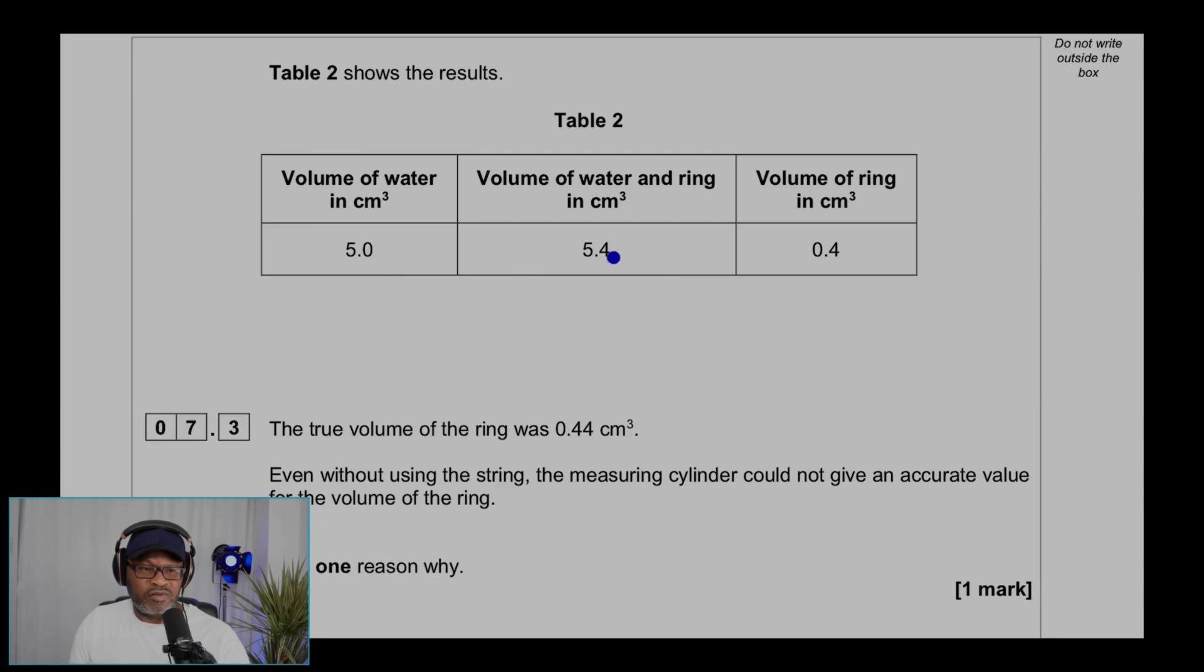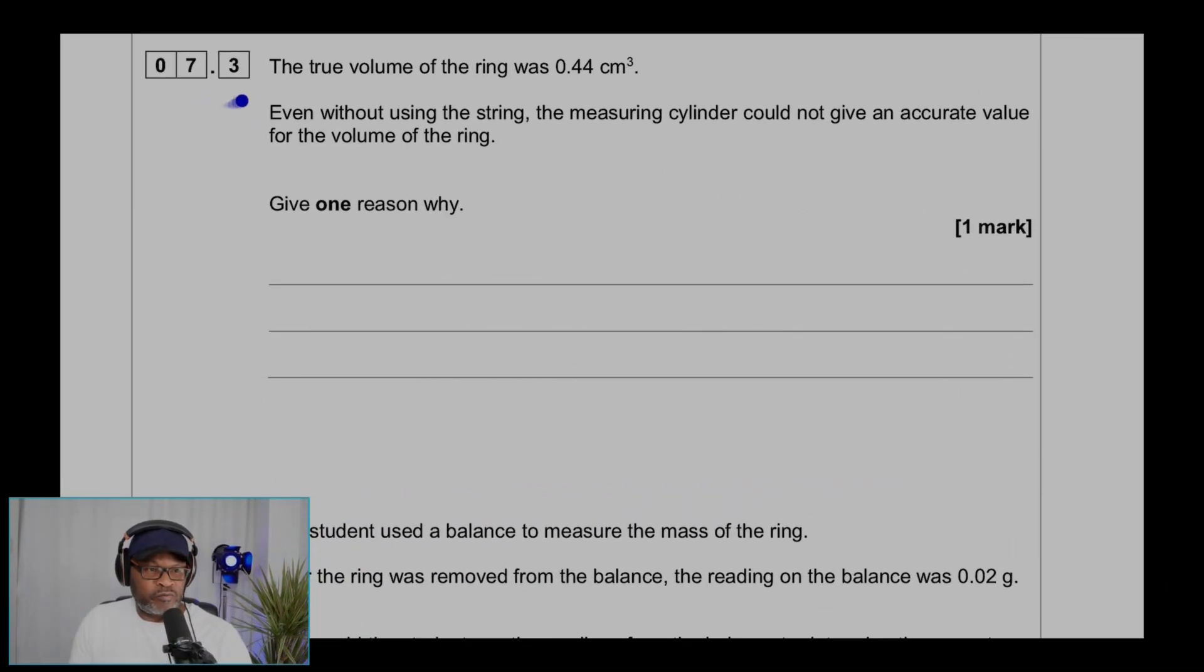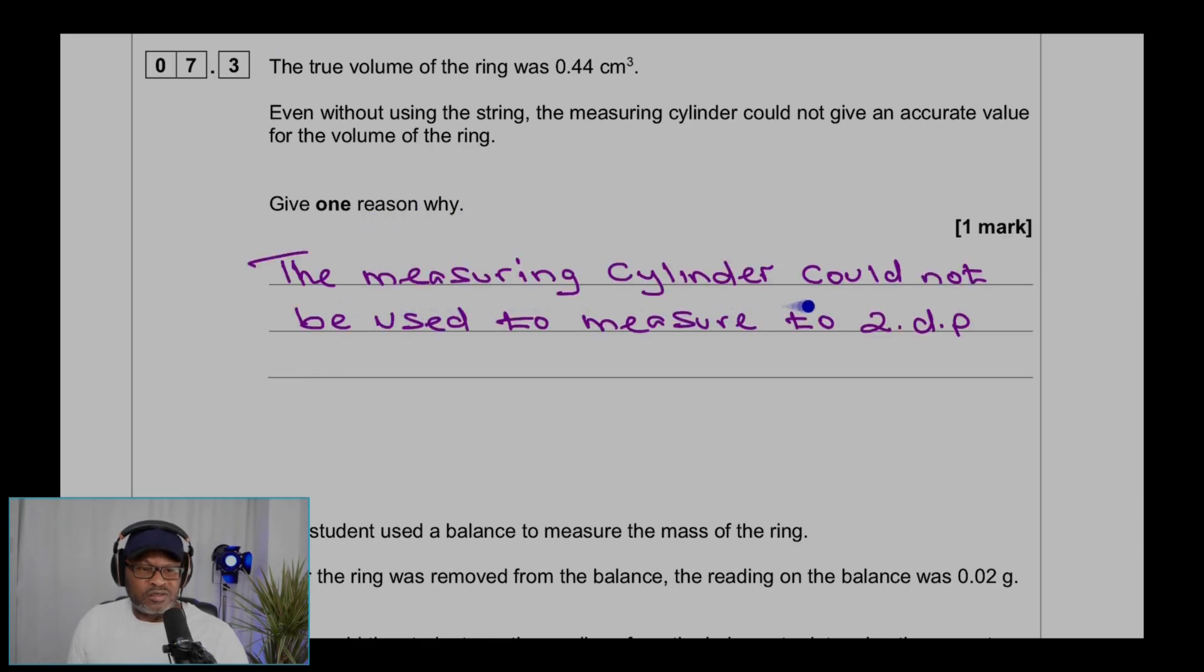For 7.3, the true volume of the ring was 0.44 centimeter cube. Even without using the string, the measuring cylinder could not give an accurate value of the volume of the ring. Give one reason why. The measuring cylinder could not be used to measure to two decimal places.